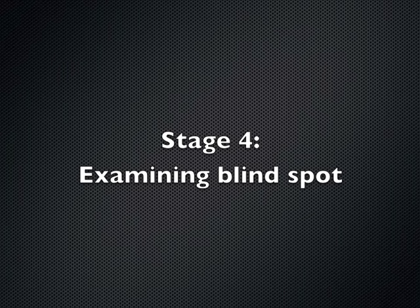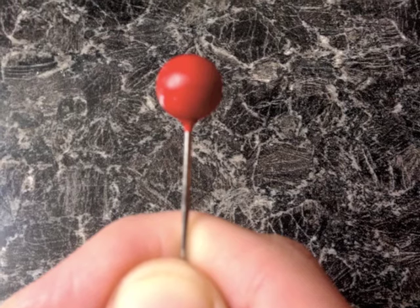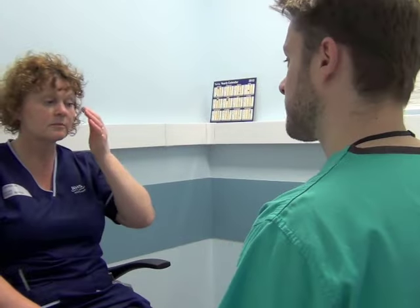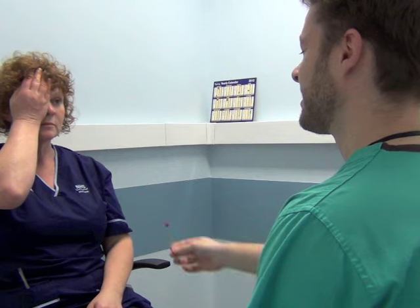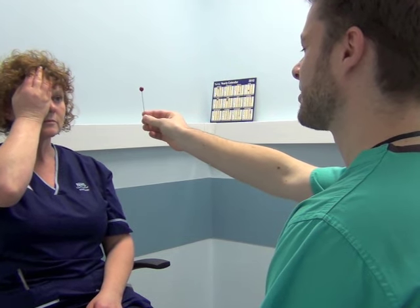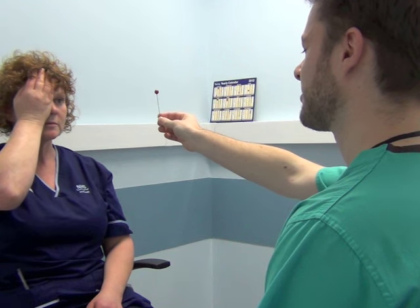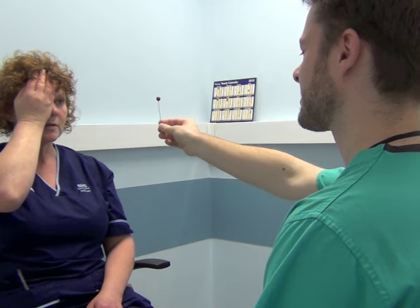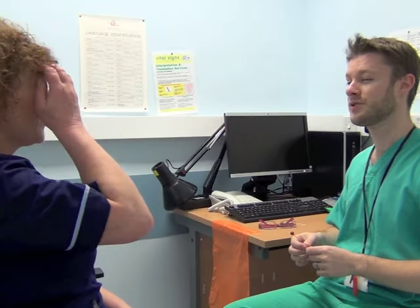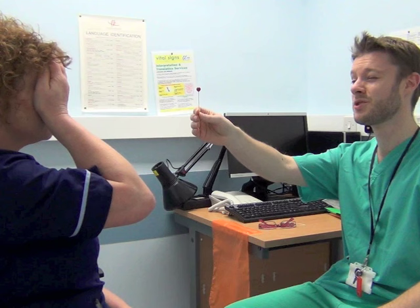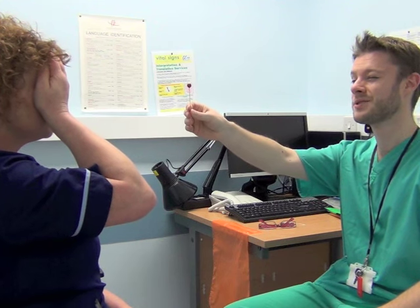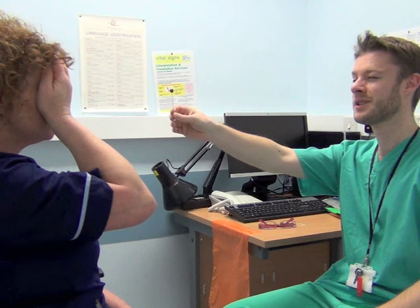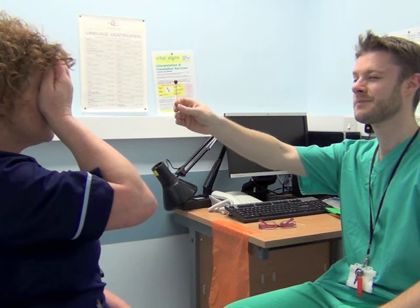The final stage involves assessing the blind spot, most commonly done using a red pin, as the central portion of the visual field is most sensitive to red light. With one eye covered, the red pin is first held centrally and moved temporally, as the blind spot is located 15 degrees temporal to fixation. The patient reports when the red pin disappears and then when it reappears, mapping out the blind spot compared to the examiner's own. An enlarged blind spot may be found in conditions such as optic neuritis or optic nerve head swelling as found in papilledema.